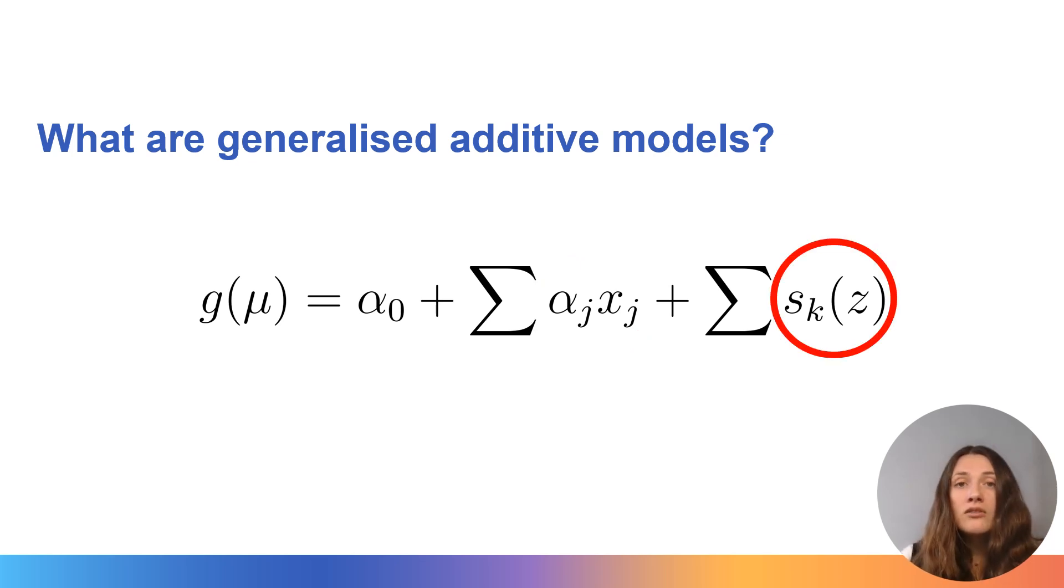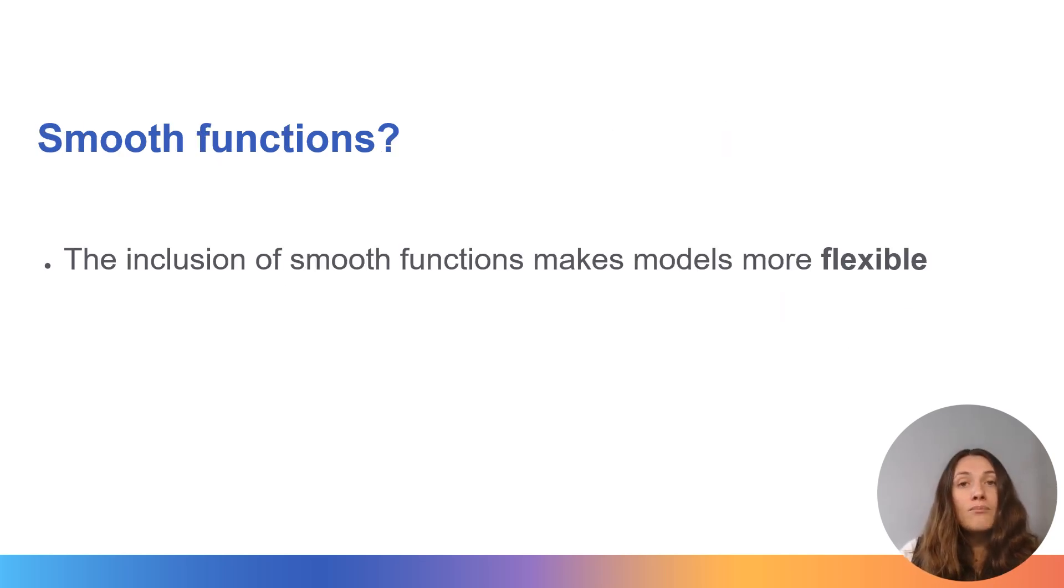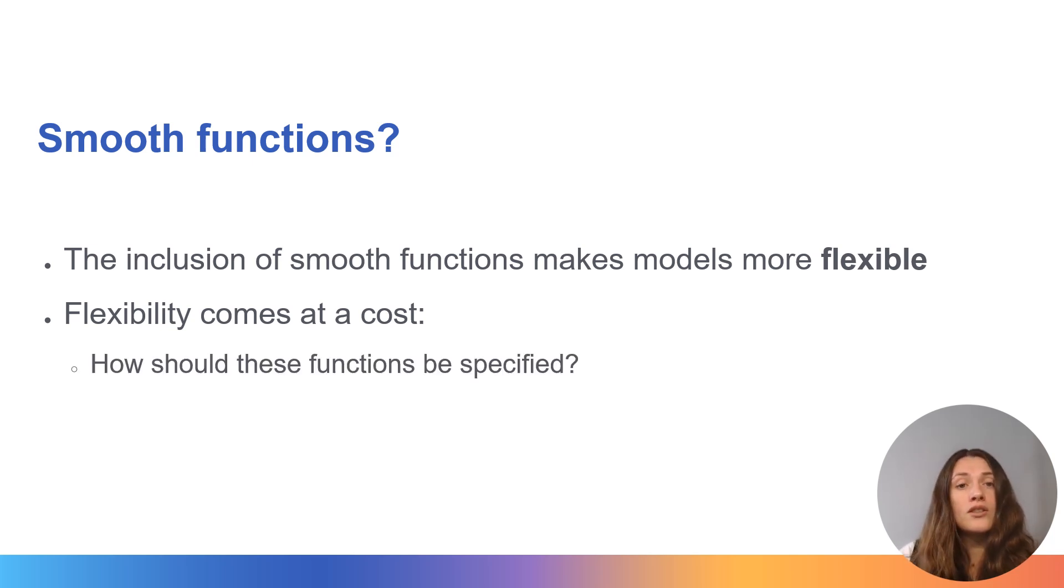The final term is what sets these generalized additive models apart. This is smooth functions applied to some covariates within our model. These smooth functions make our modeling framework far more flexible but that flexibility does come at a cost. The inclusion of smooth functions requires some specification of how that relationship looks.